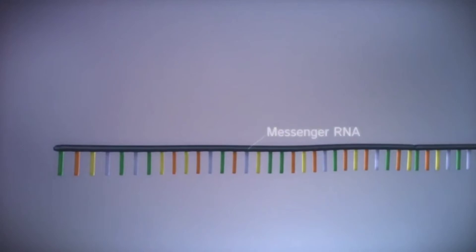Before the messenger RNA can be used as a template for the production of proteins, it needs to be processed. This involves removing and adding sections of RNA.